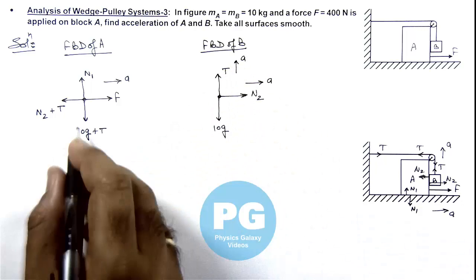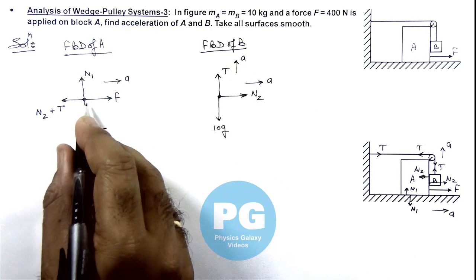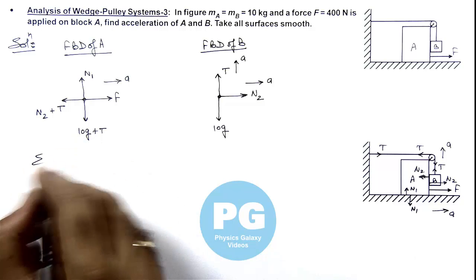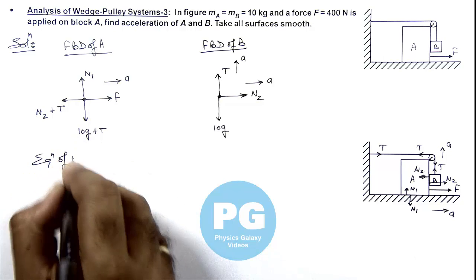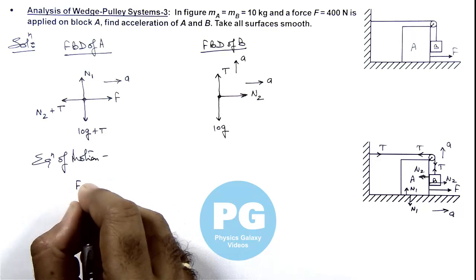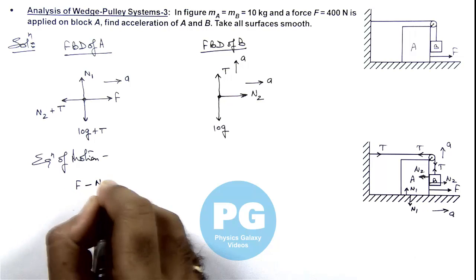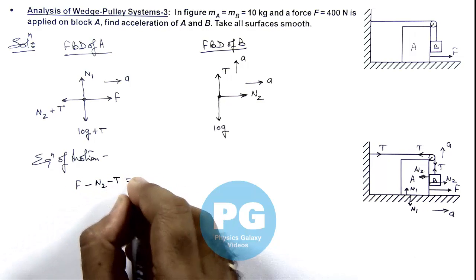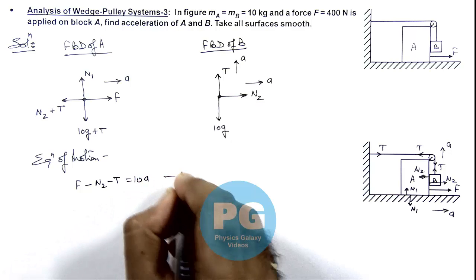Now if we write the motion equations for the 2 blocks then for block A we can write here equation of motion. As it is moving toward right so this F minus N2 minus T is equal to 10a. This is equation 1.